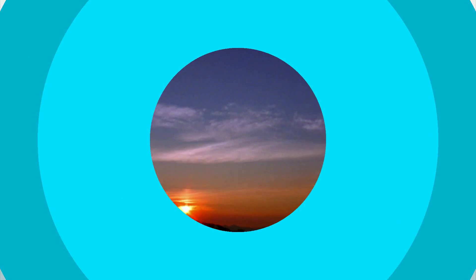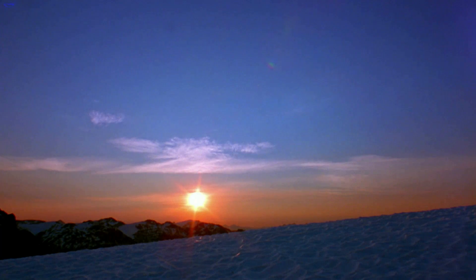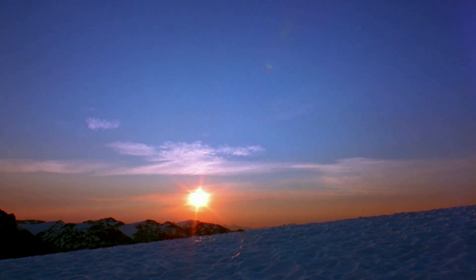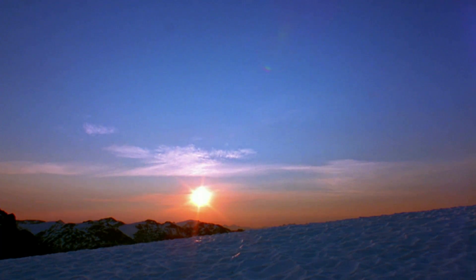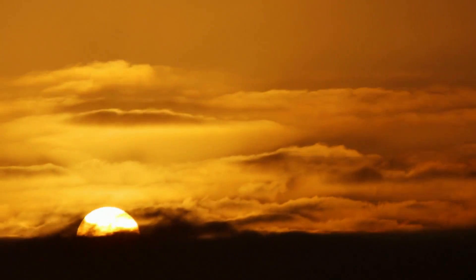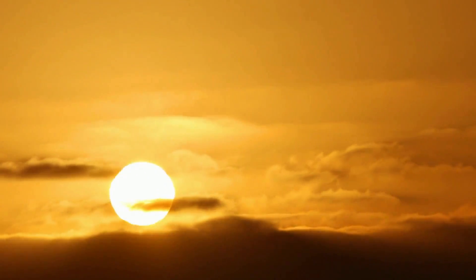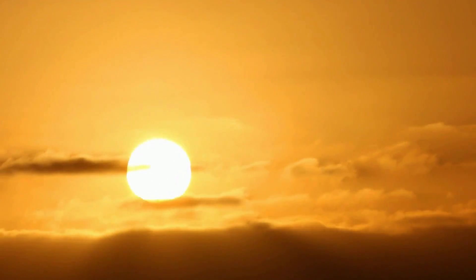Does the sun always rise exactly due east and set due west? Remember, the sun appears to rise and set due to the movement of the Earth. Actually, the sun rises due east and sets due west only two times a year in each hemisphere.